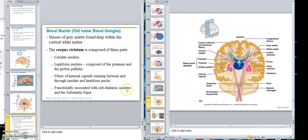Functions associated with subthalamic nuclei and substantia nigra. Substantia nigra is another area in the brain. Actually, that's where dopamine is produced, you know, Parkinson's disease, is in the substantia nigra.